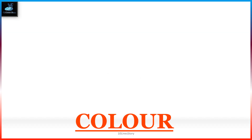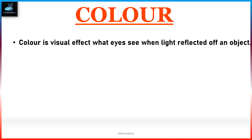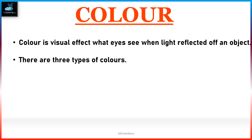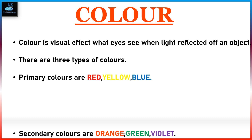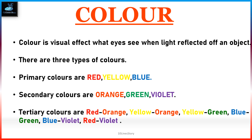Welcome back to 10 Line Story Channel. The topic is 10 lines on color. Color is a visual effect — what the eyes see when light reflects off an object. There are three types of colors: primary colors are red, yellow, and blue; secondary colors are orange, green, and violet; tertiary colors are red-orange, yellow-orange, yellow-green, blue-green, blue-violet, and red-violet.